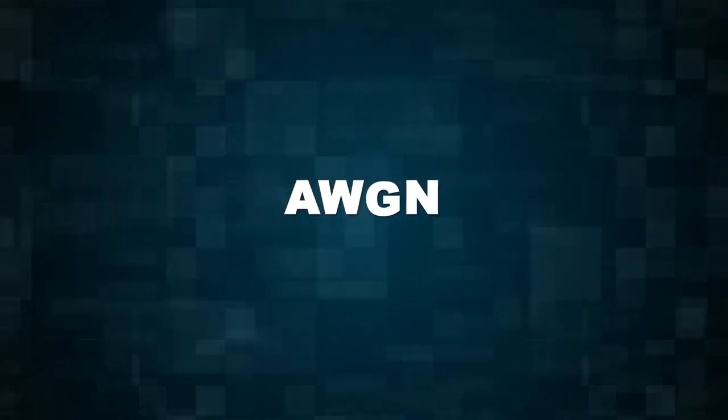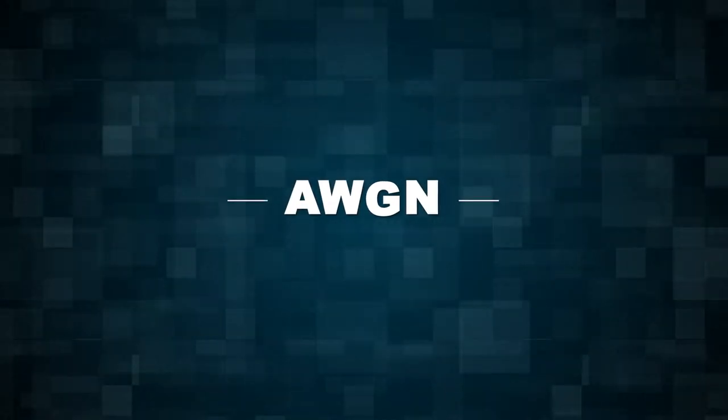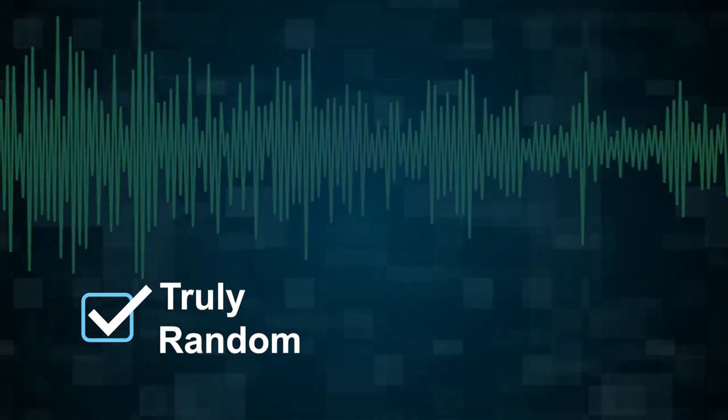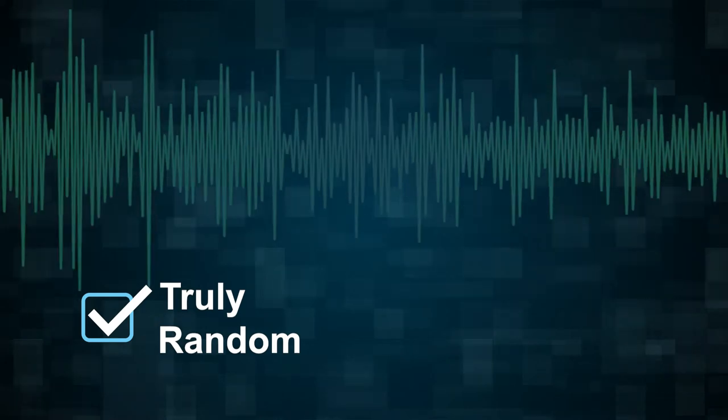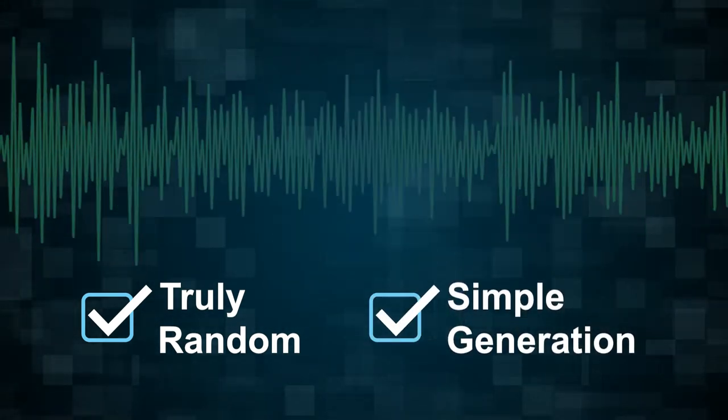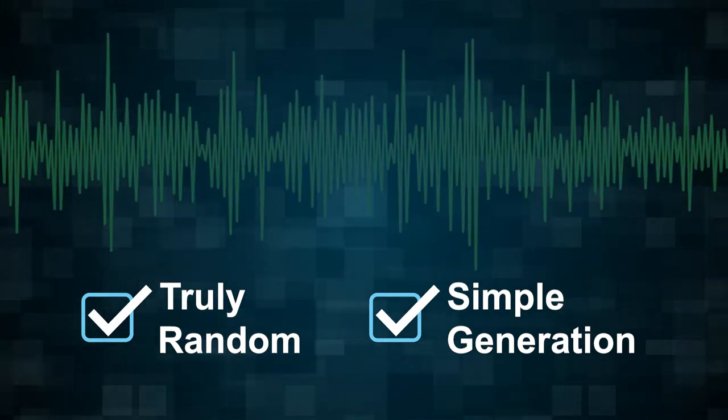These AWGN signals can replace the use of pseudorandom keys and offer a truly random way to mask data, with transmissions appearing as harmless background noise. Signal generation is also easier compared to using complicated encryption algorithms.